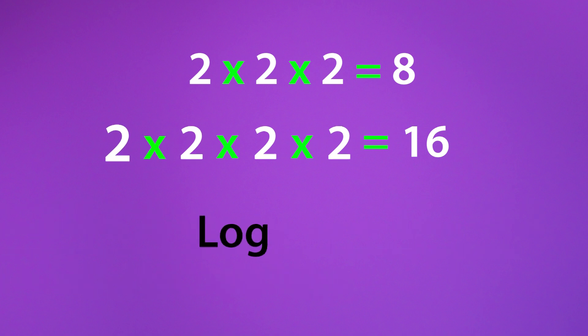2 multiplied 4 times equals 16 is written as log 16 to the base 2. This gives the number of times we need to multiply 2 to get 16, which is 4.